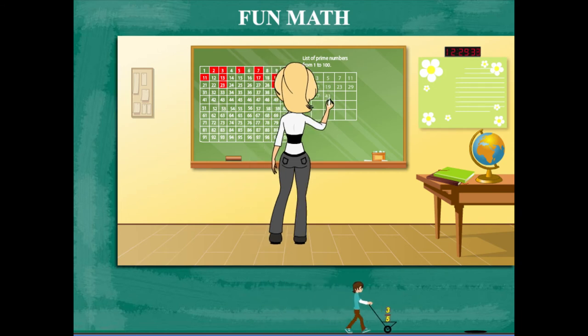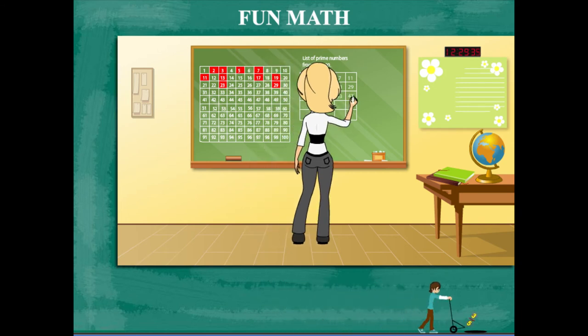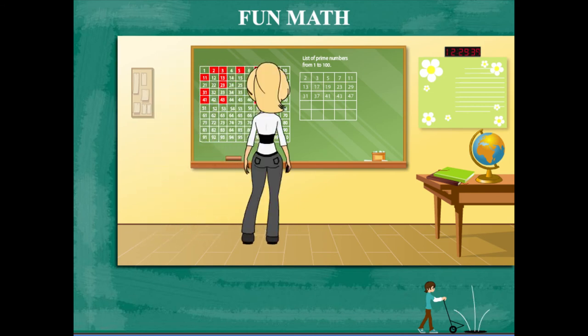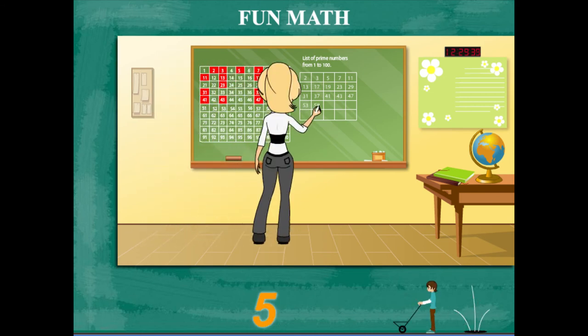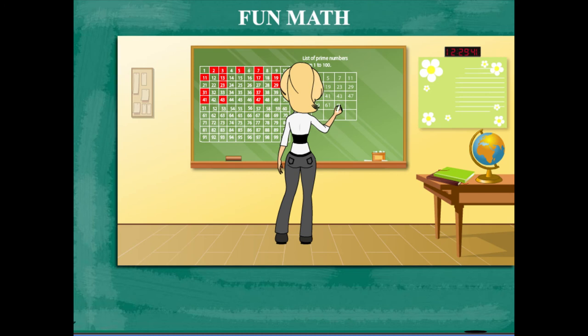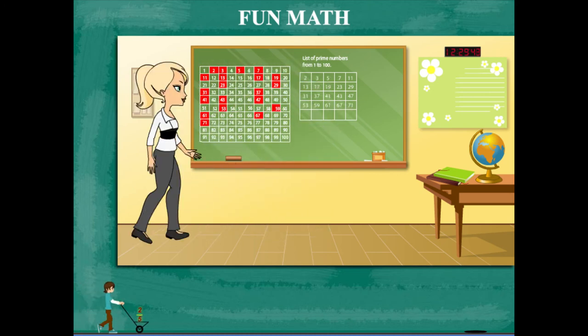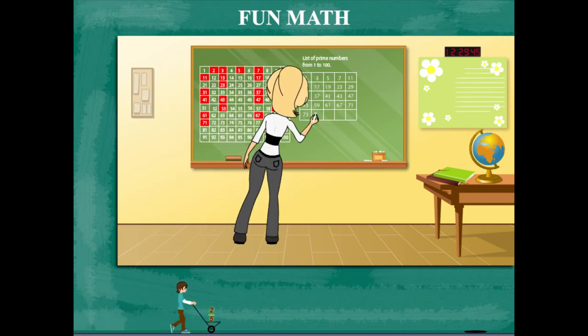31, 37, 41, 43, 47 in the third row, 53, 59, 61, 67, 71 in the fourth row.